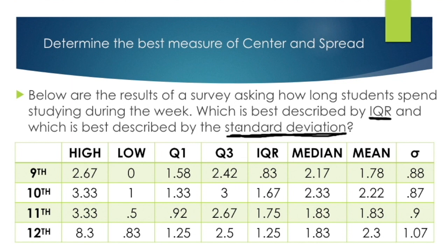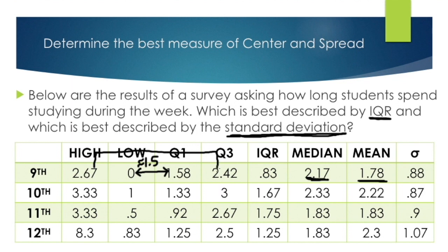Looking at the 9th graders: the mean and median are pretty close, but let's check the whiskers. The low whisker goes from 0 to the first quartile of 1.58 — approximately 1.5 in length. The high whisker from the third quartile to the maximum is approximately 0.25. That's a big discrepancy — 0.25 versus 1.5 are way off — so there's no symmetry, and IQR is the best measure for 9th graders.